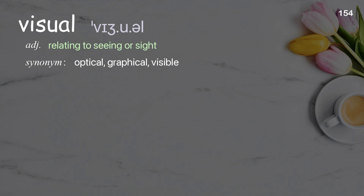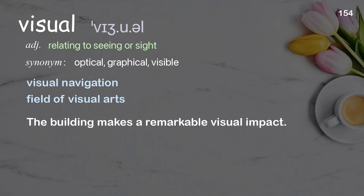Visual: relating to seeing or sight. Examples: visual navigation, field of visual arts. The building makes a remarkable visual impact.